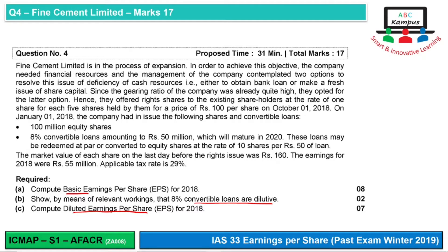Find Cement Limited is in the process of expansion. In order to achieve this objective, the company needs financial resources. Management contemplated two options to resolve the deficiency of cash resources: either obtain a bank loan or make a fresh issue of share capital. Since the gearing ratio was already quite high, they opted for the latter option — offering right shares to existing shareholders at the rate of one share per each five held. This first paragraph is background information not directly relevant to the calculation.